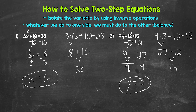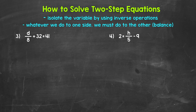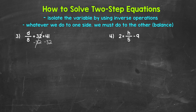Let's move on to numbers 3 and 4. Let's jump into number 3, where we have d divided by 8 plus 32 equals 41. We need to isolate that variable d using inverse operations, going in reverse order of operations. We need to undo the addition first — the inverse operation of addition is subtraction. So let's subtract 32 from the left side, and subtract 32 from the right side as well. On the left side, adding 32 and subtracting 32 cancel each other out, so we have d divided by 8 equals 41 minus 32, which gives us 9.